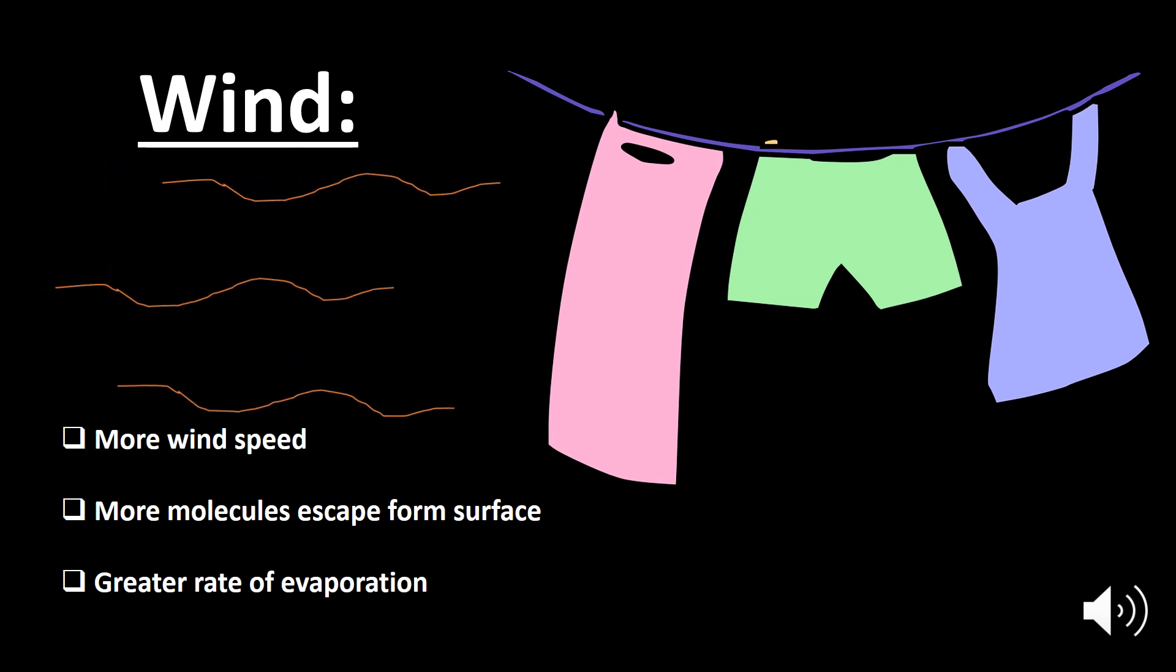This is because the air blown above the surface of the liquid takes away the escaping molecules and space is made available for other molecules. It means that wind speed increase results in greater amount of water vapor escaping, and as a result the rate of evaporation increases.